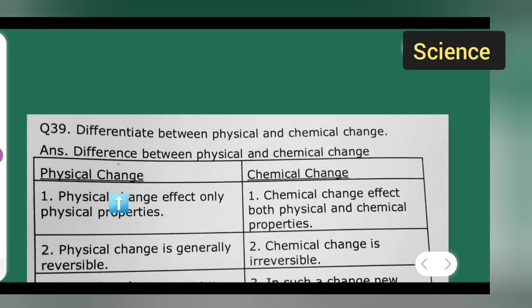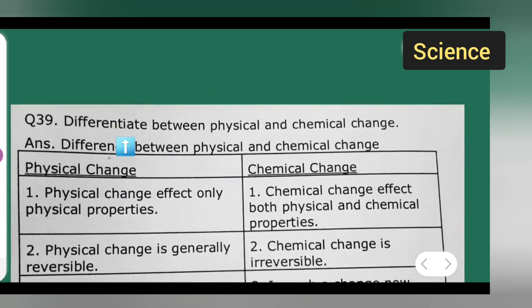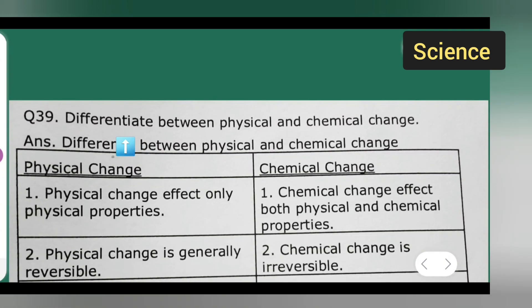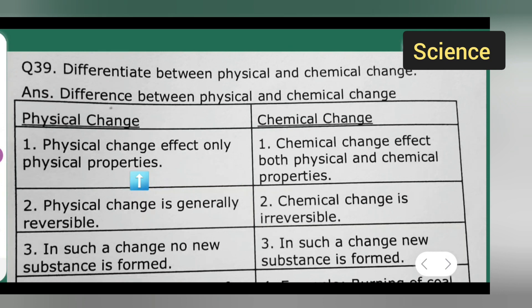So I can take down the question. Differentiate between physical and chemical change. Answer is difference between physical and chemical change are, there are two sides. One is, here this side it is physical change and this side it is chemical change.